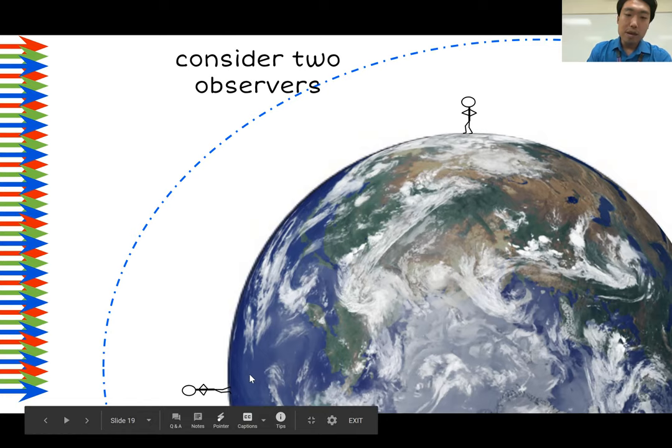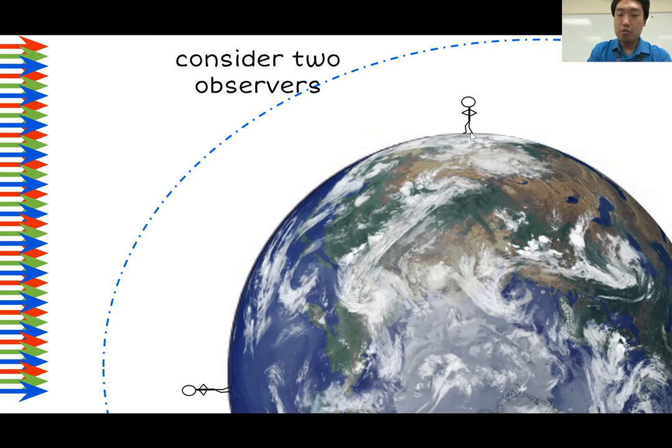The person up here is about one quarter of an Earth rotation away. So, that is about six hours. So, we can say that this is either 6 a.m. or 6 p.m., depending on the direction of the rotation. But either way, this person is experiencing a different time.